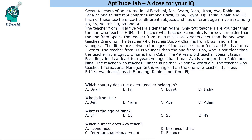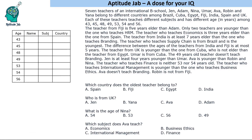Looking at these statements, we shall try to find the ones from which we can directly fill data into the table. Let us formulate a table. We have taken age as the first column because whenever you have a puzzle with numerical relations, we look for those first. If you read the statements, there are some numerical relations.